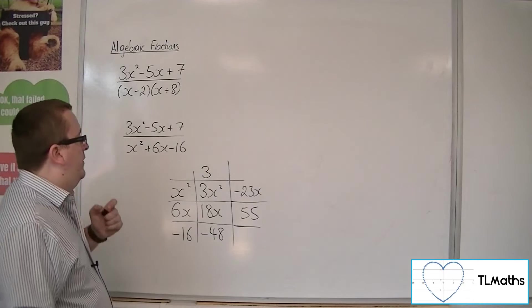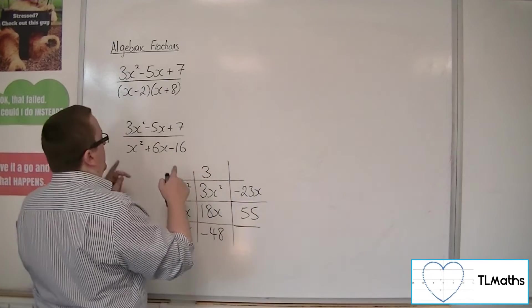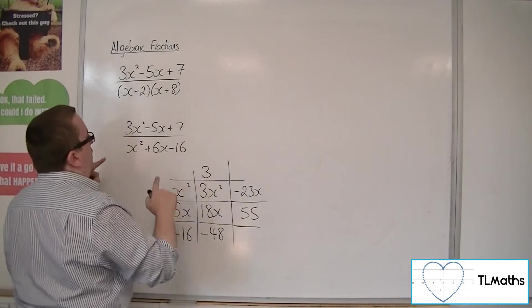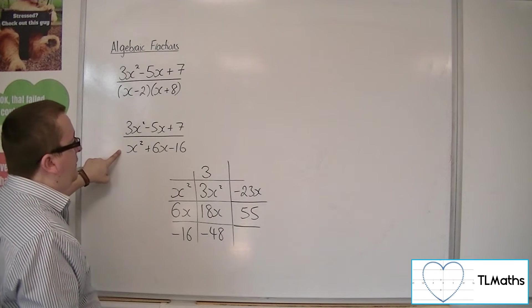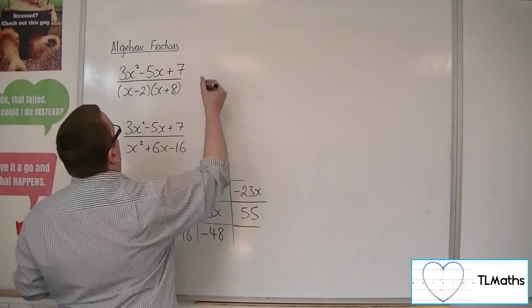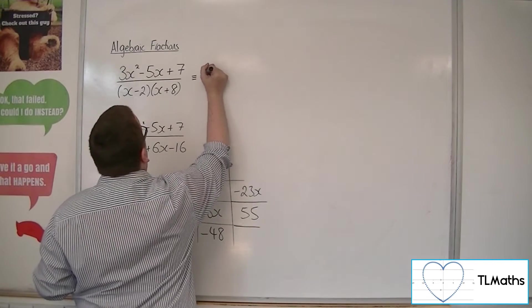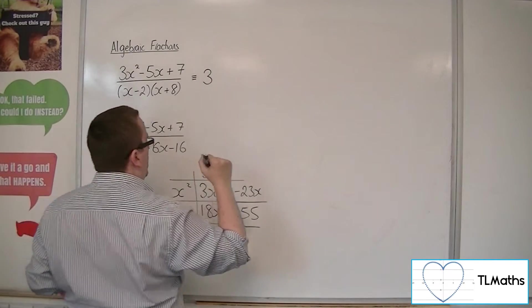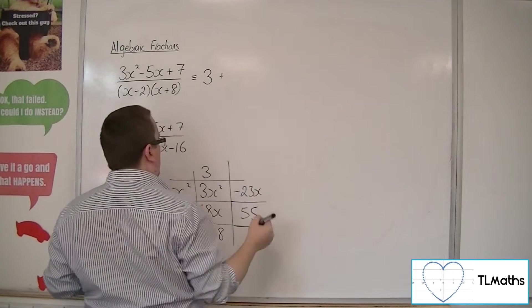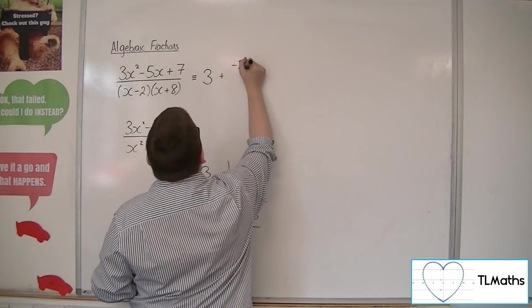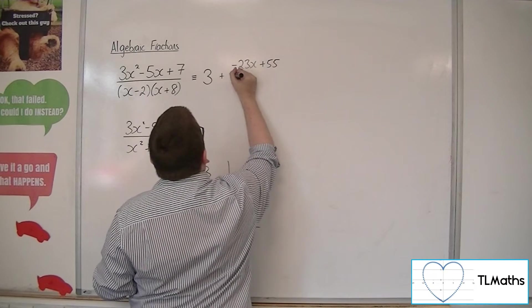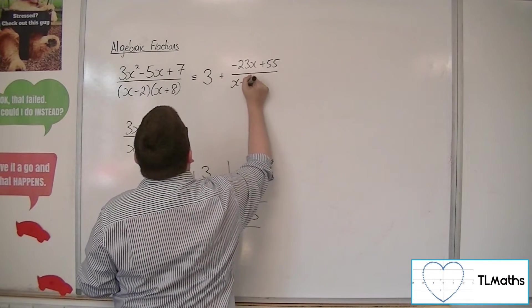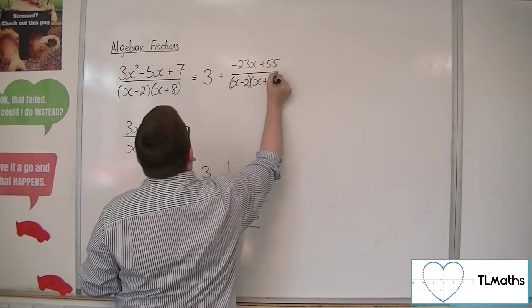So what I've got is that 3x squared minus 5x plus 7 over x squared plus 6x minus 16 must be the same as 3 plus minus 23x plus 55 over x minus 2 times x plus 8.